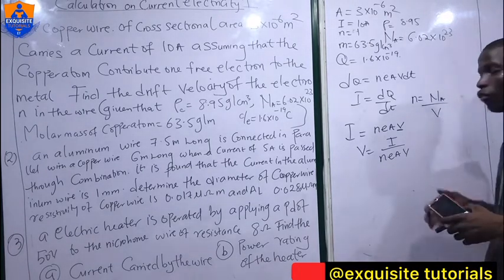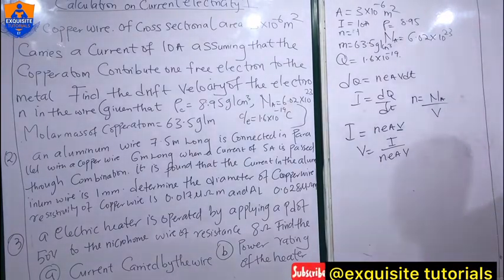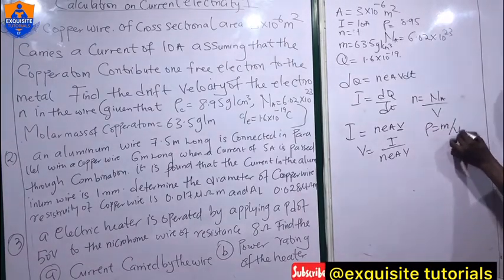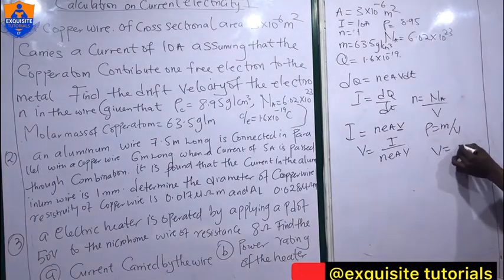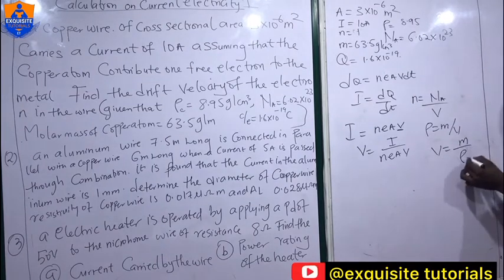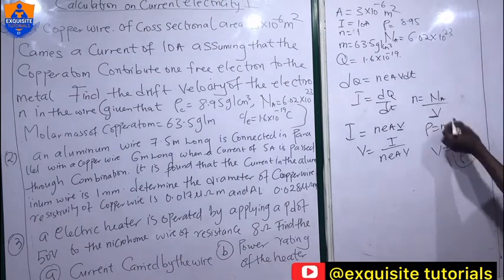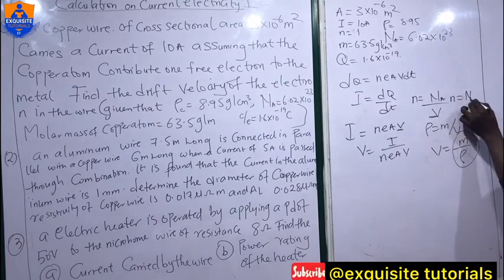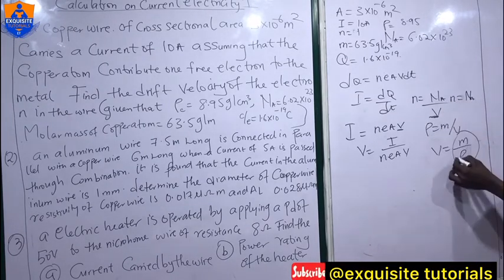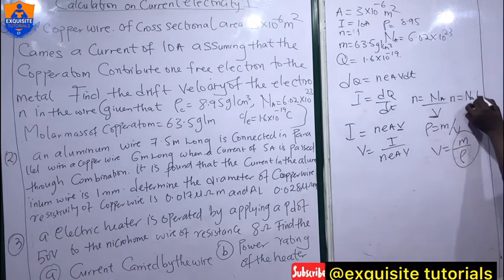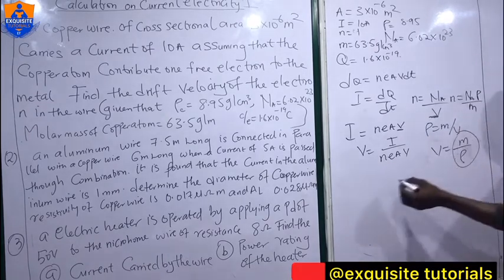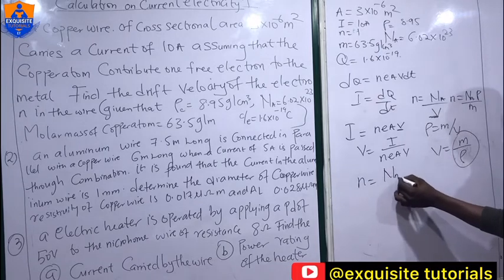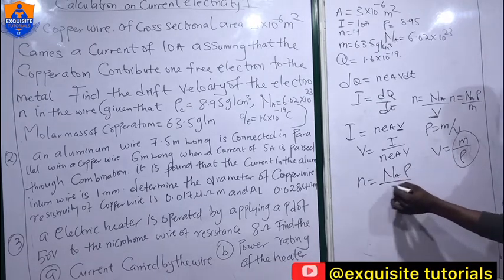Before doing that, our small n is equal to Avogadro's constant divided by the volume. Remember that density equals mass over volume, so volume equals mass over density. Substituting, n = N_A × density/mass.